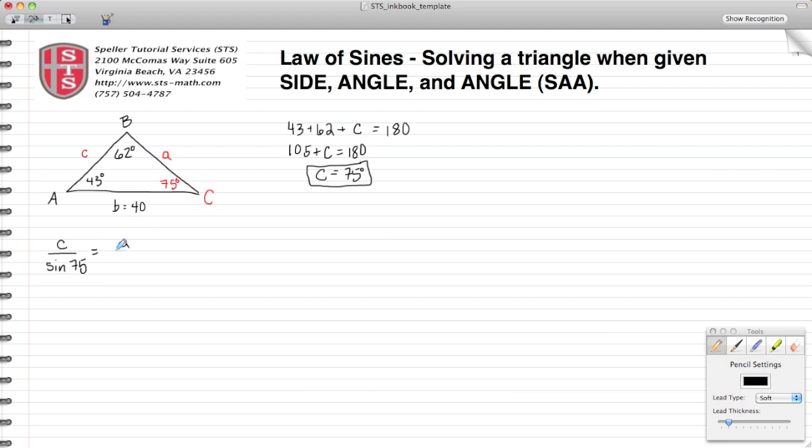Its opposite angle is sine of 43 degrees and that's equal to 40, which is side length B, and its opposite angle is sine 62 degrees.